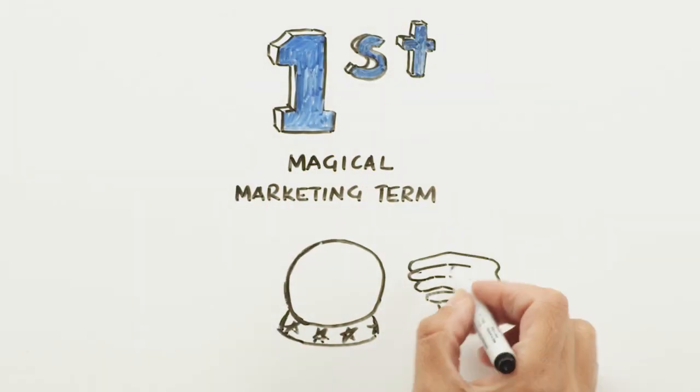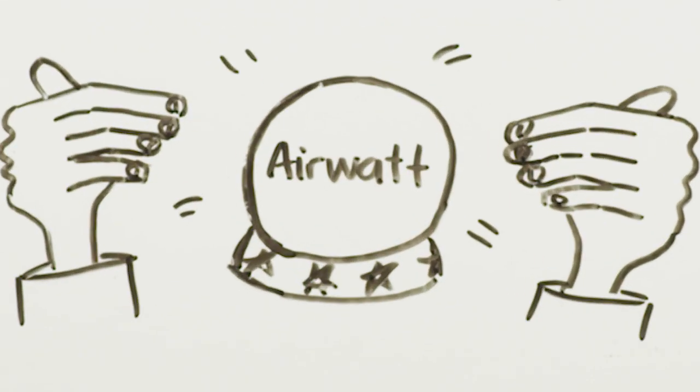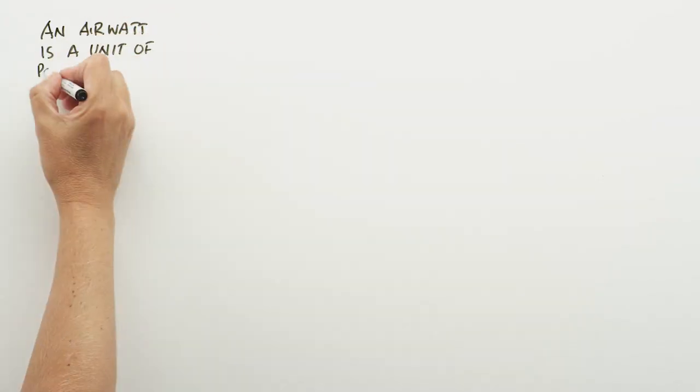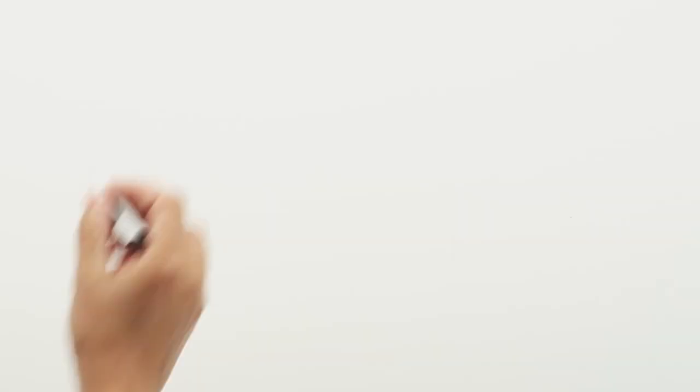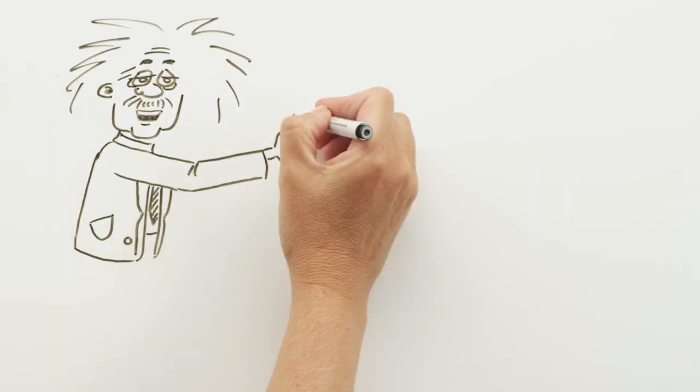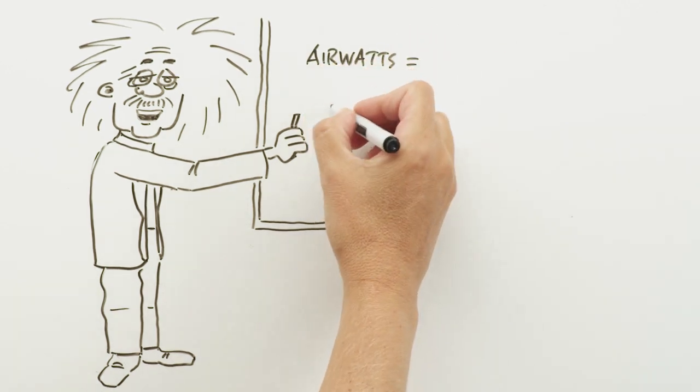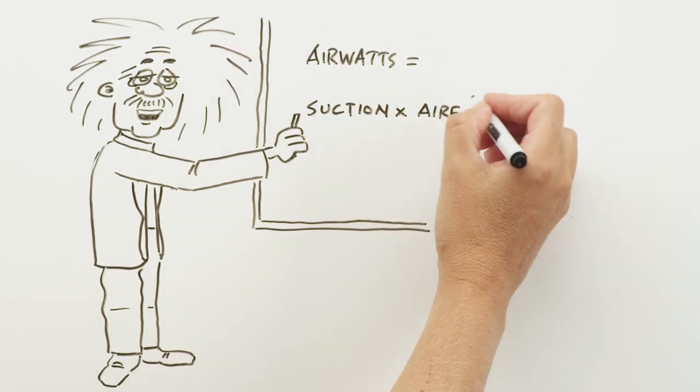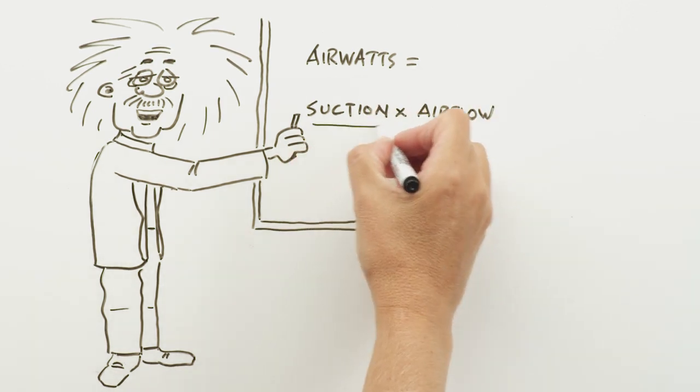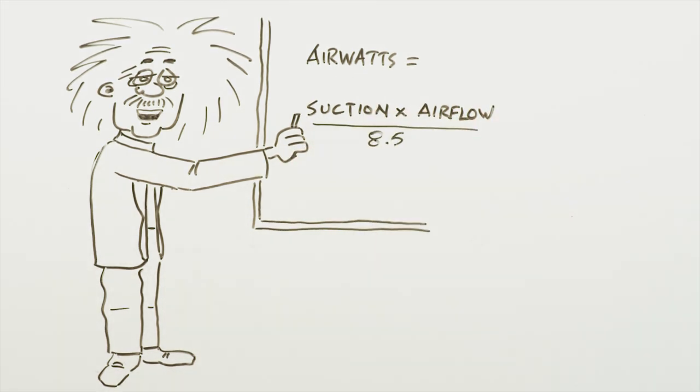The first magic word is airwatt. An airwatt is a unit of power determined by a mathematical equation. Here it is. An airwatt equals suction, measured in inches of water lift, times air flow, measured in cubic feet per minute, divided by 8.5.